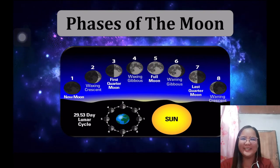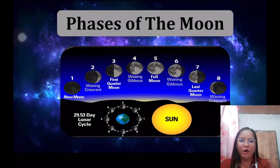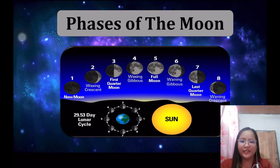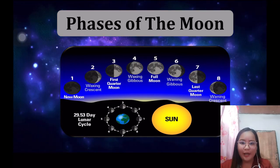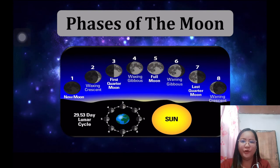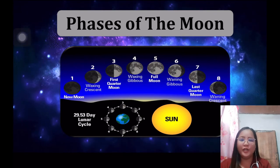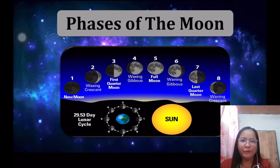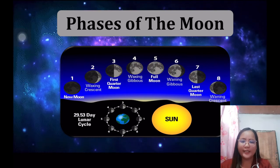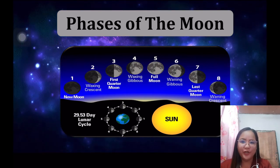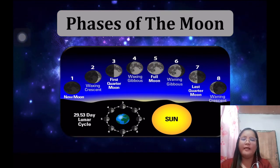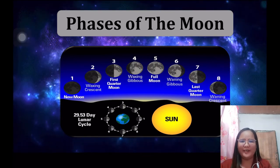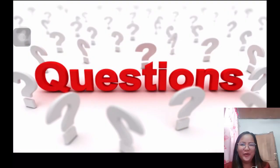We already know what the moon is and the different phases of the moon. To recap, the eight phases are: new moon, waxing crescent, first quarter moon, waxing gibbous, full moon, waning gibbous, last quarter moon, and the waning crescent.